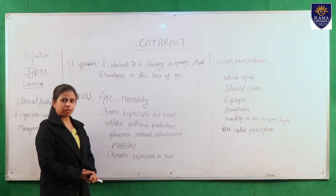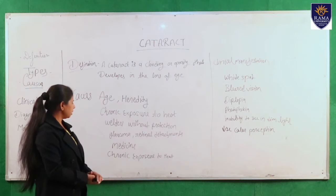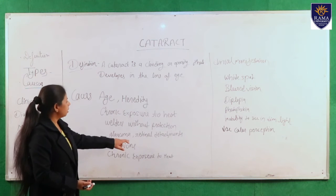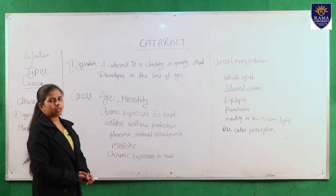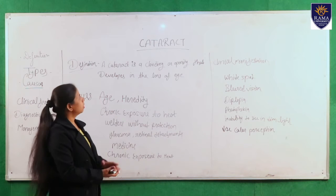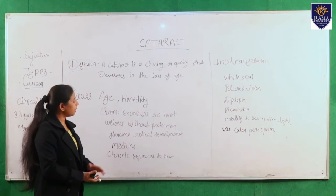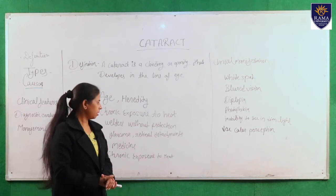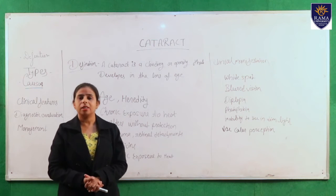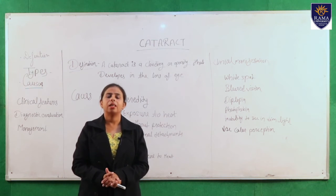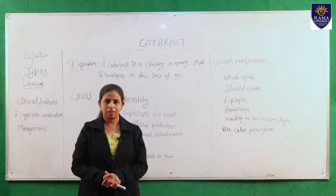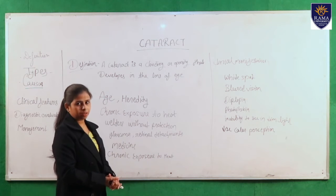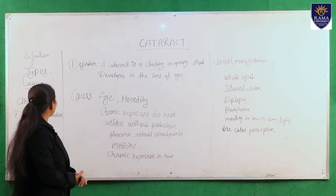Many diseases are also responsible for cataract, such as glaucoma and retinal detachment — these eye disorders can lead to cataract. Next is medicine: many drugs can cause cataract, like oral contraceptives, tranquilizers, and thiazides. Another cause is chronic exposure to radiation.